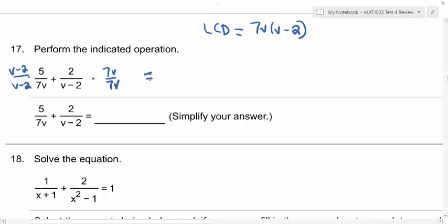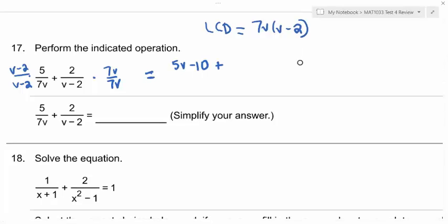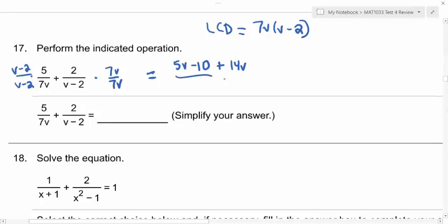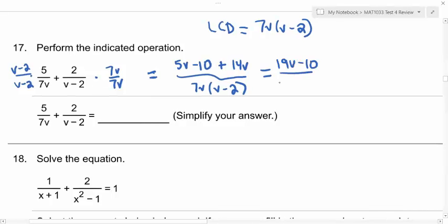Okay, so what is 5 times v minus 2? It would be 5v minus 10. Good. Plus what? Plus 14v. All over? All over the 7v times v minus 2. Okay, and then last but not least, if we combine like terms, what do we get? 19v minus 10 all over the denominator, 7v times v minus 2.